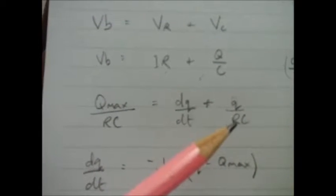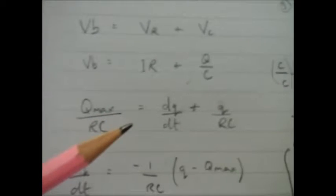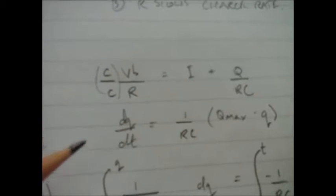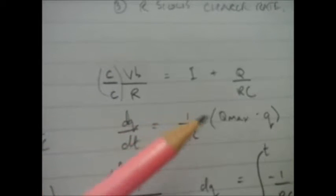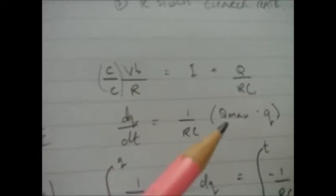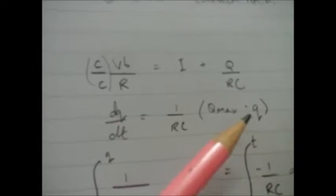Now, if I take both the RC terms to one side, I'll end up with that. And I've got the current equals 1 over RC times Q max minus Q. The thing is though, I'm going to do a bit of fiddling with this to make that Q positive.